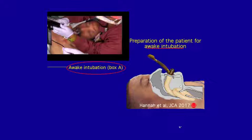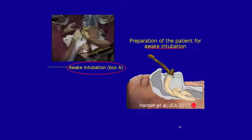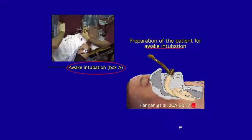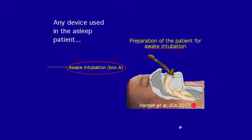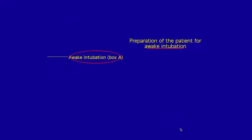We can also use supraglottic airways. This is an intubating LMA, and we can use these intubating supraglottic airways to intubate patients awake. Any device used in the asleep patient can be used in the awake patient — that's one of the key take-home lessons.